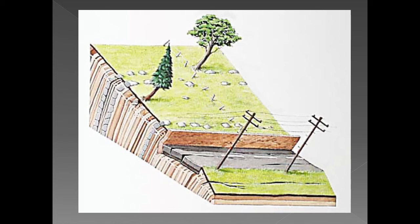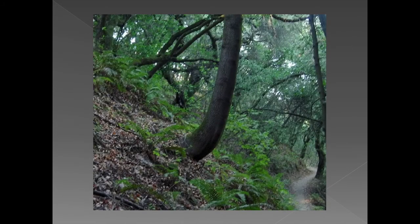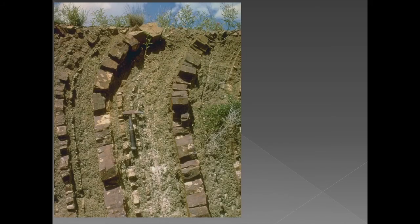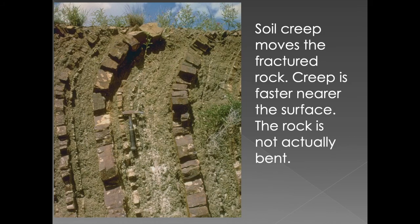The road cracks up because of soil creep. Within a forest, the tree's growth pattern is changed because the roots moved forward in the soil, so the tree's growth was adjusted due to the movement of the soil where the roots were embedded. In a cutout, soil creep moves the fractured rock and it's faster near the surface. The rock is not actually bent by folding — the soil has moved forward, pushing that fractured rock forward, not by any tectonic force.